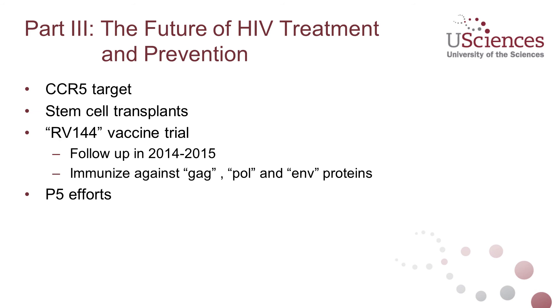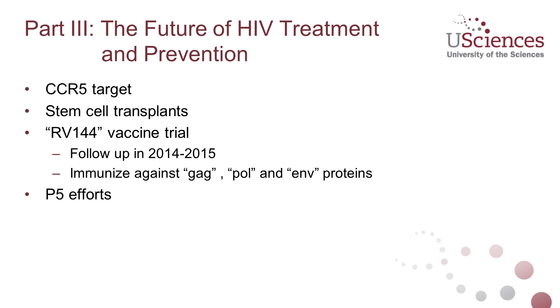Currently there are many research efforts done by the P5 group — which stands for Pox Protein Public-Private Partnership. This is a partnership between the National Institute of Allergy and Infectious Disease, the NIH, and the Gates Foundation, which is sponsoring a lot of research in the area of HIV prevention. That concludes this section on the biology of AIDS.